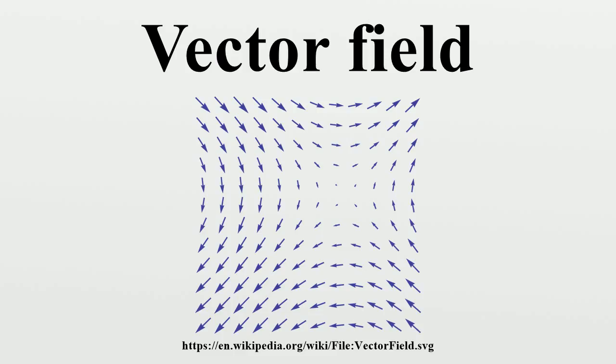More generally, vector fields are defined on differentiable manifolds, which are spaces that look like Euclidean space on small scales but may have more complicated structure on larger scales. In this setting, a vector field gives a tangent vector at each point of the manifold.